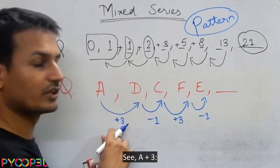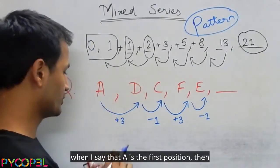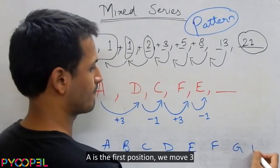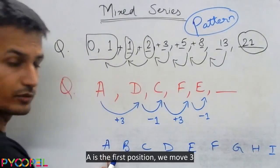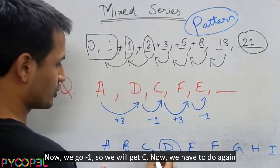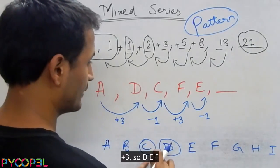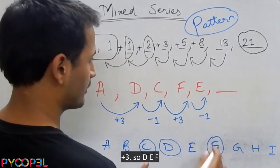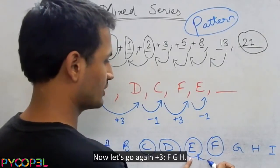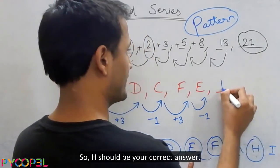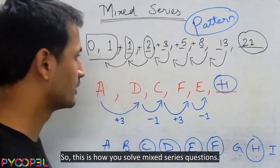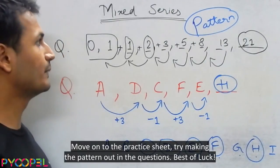See, A plus 3. Okay, when I say A is the first position, then in the first position we move three positions ahead: B, C, D. So we get A plus 3. Now we go minus 1, so we'll get C. Now we have to go again plus 3, so D, E, F. Now go minus 1, so you'll get E. Now let's go again plus 3: F, G, H. So H should be your correct answer. So this is how you solve some mixed series questions.